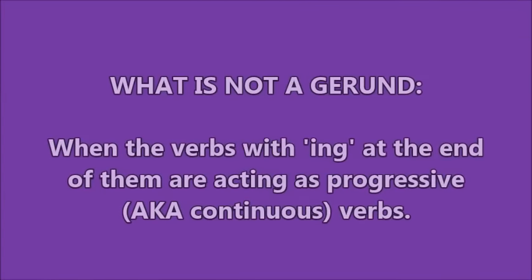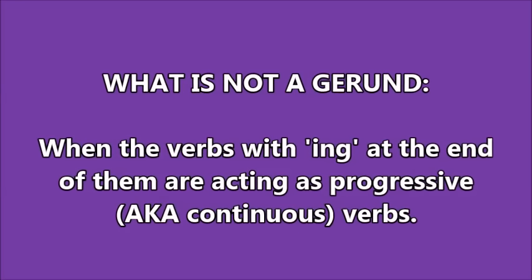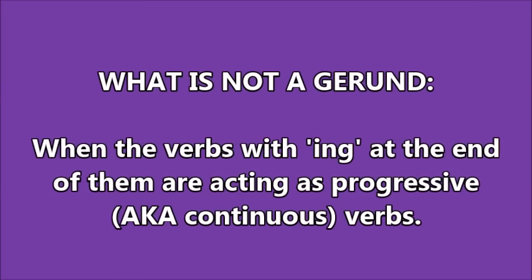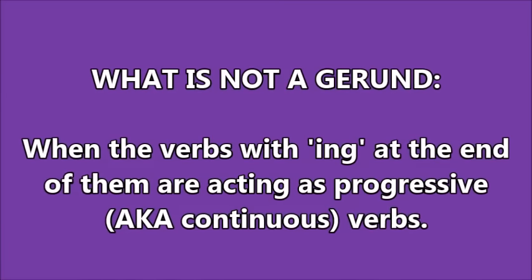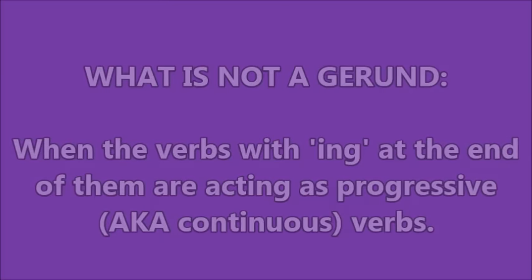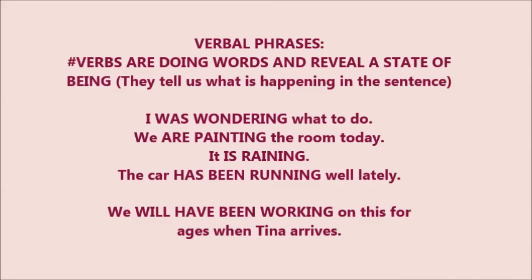This next part is very important — what is not a gerund. When verbs with -ing at the end are acting as progressive, also known as continuous verbs, they are not gerunds. Verbal phrase examples: 'I was wondering what to do.' 'We are painting the room today.' 'It is raining.' 'The car has been running well lately.' 'We will have been working on this for ages when Tina arrives.' These were all examples of verbal phrases — there were no gerunds there at all.